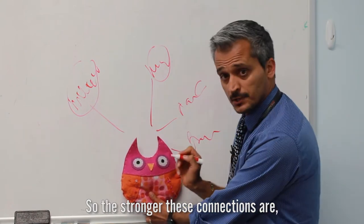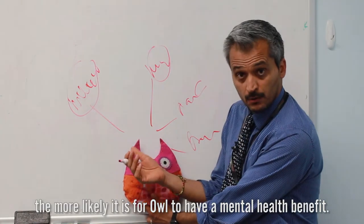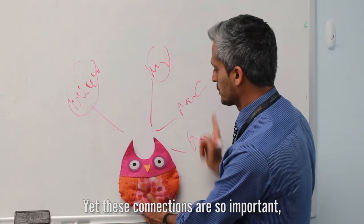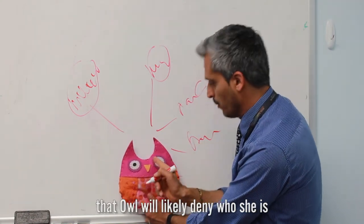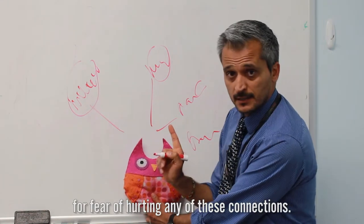So the stronger these connections are, the more likely it is for owl to have a mental health benefit from that. And yet these connections are so important that owl will likely deny who she is for fear of hurting any of these connections.